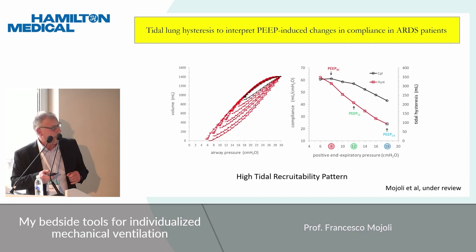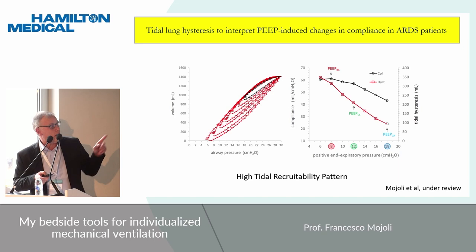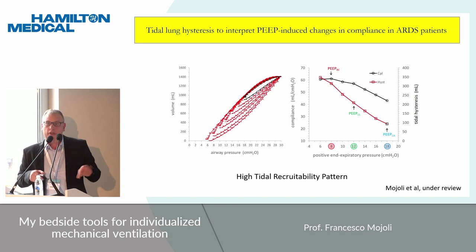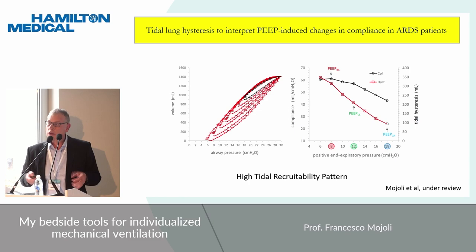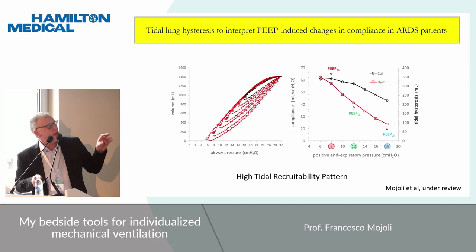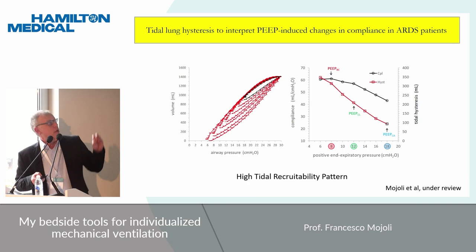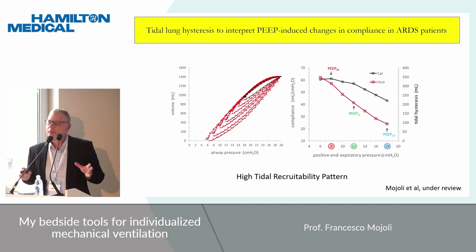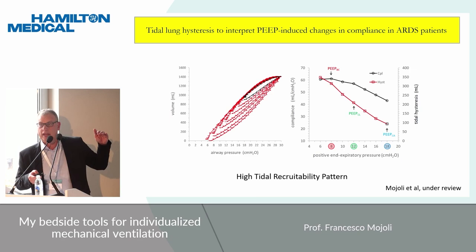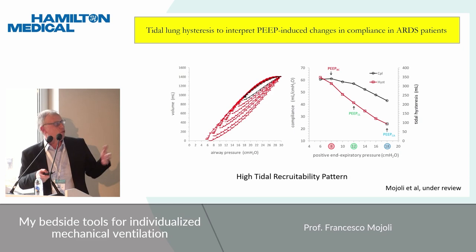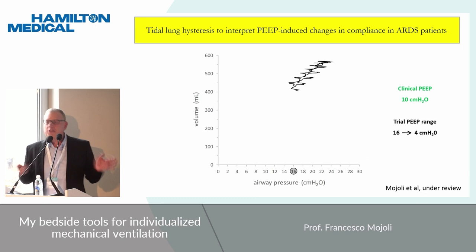Open circles on the right show compliance measured at each step, and open squares show tidal hysteresis. In this particular patient, whom we called a high tidal recruiter, the combined approach actually changed a lot the interpretation of the trial. The combined approach suggested staying at 18 cm of water PIP, because that was the level able to avoid tidal recruitment. Whereas if you look only at compliance, you would move to very lower values, like 8 cm of water, because that level of PIP was associated with the best compliance — but that best compliance was associated with a very large amount of tidal recruitment.